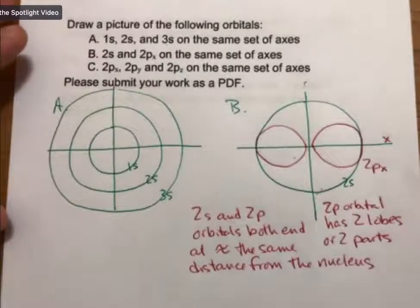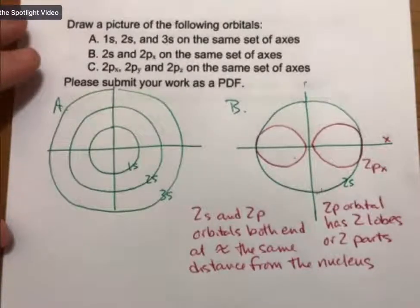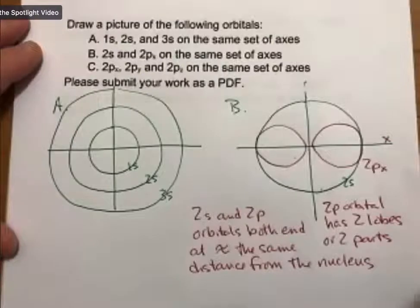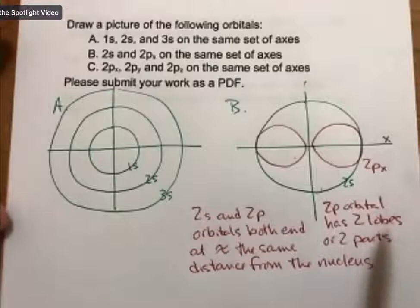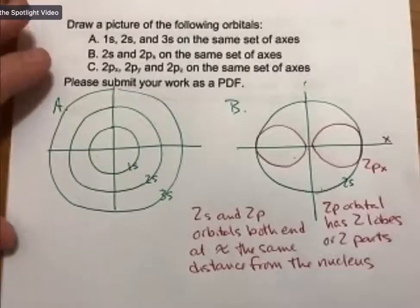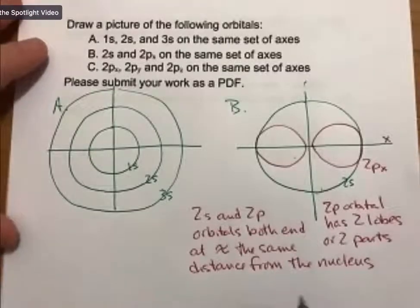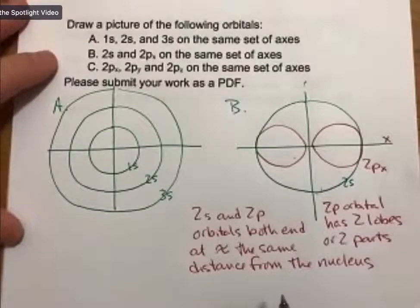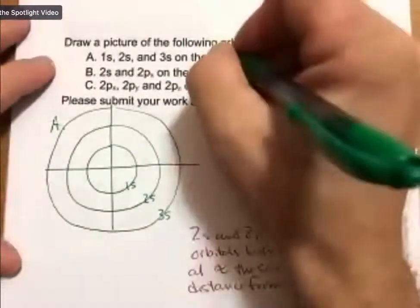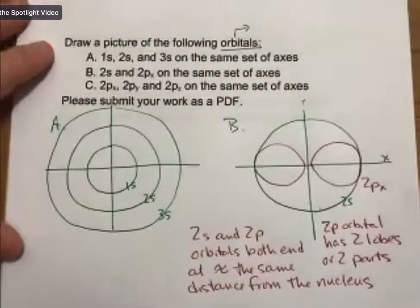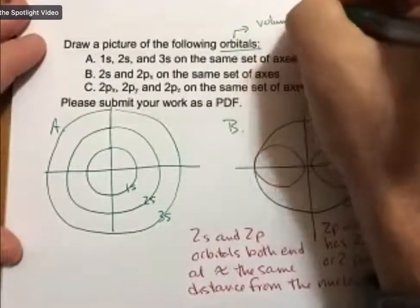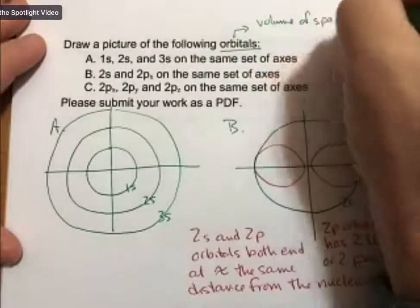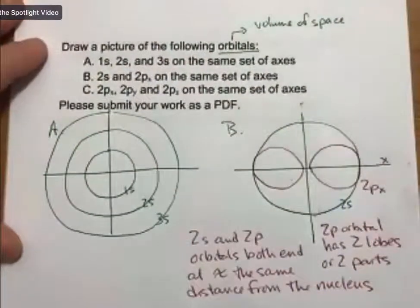We know that from last time, electrons are interesting creatures. They exist as probabilities. Again, all of these shapes—and let me just make sure I cover this—this should have been covered in the lecture outlines: the definition of an orbital. An orbital is the volume of space in which there is a 90% probability of finding the electron.